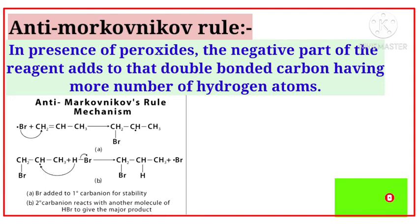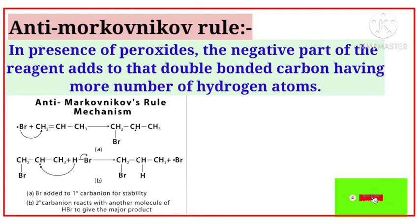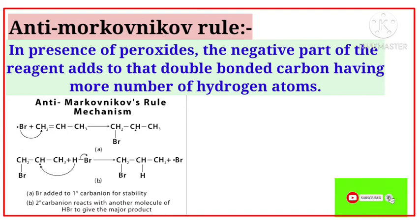Let's see the example for anti-Markovnikov rule. We are taking 1-propene reacting with hydrogen bromide (HBr) in the presence of a peroxide — for example, (C₆H₅CO)₂O₂, where the peroxide linkage is the O–O bond. When 1-propene reacts with HBr in the presence of peroxide, it produces 1-bromopropane as the major product.